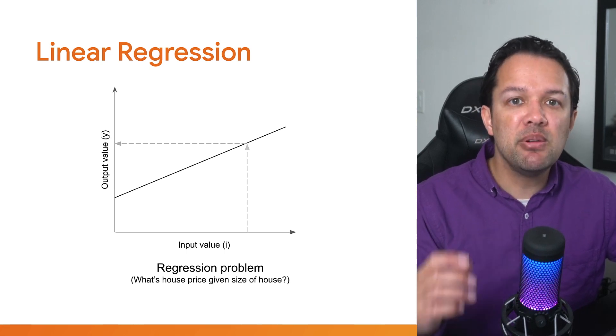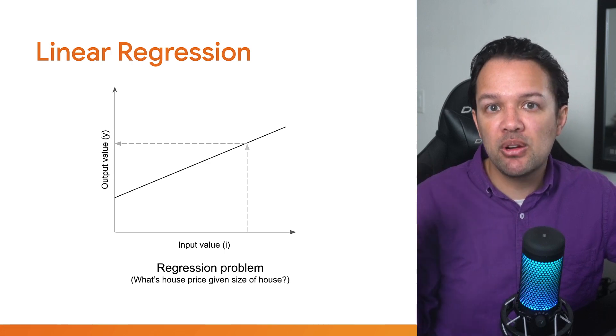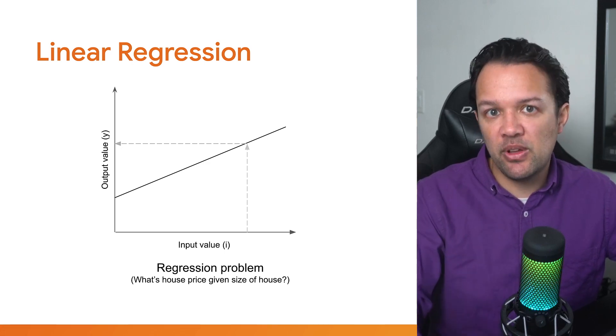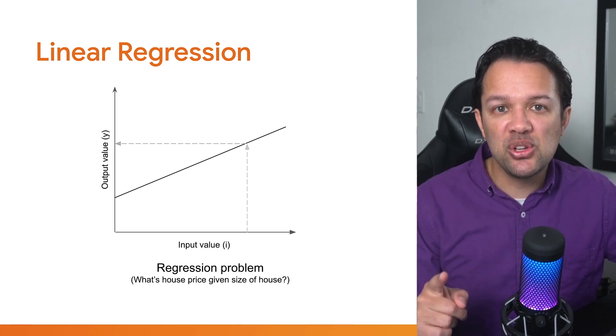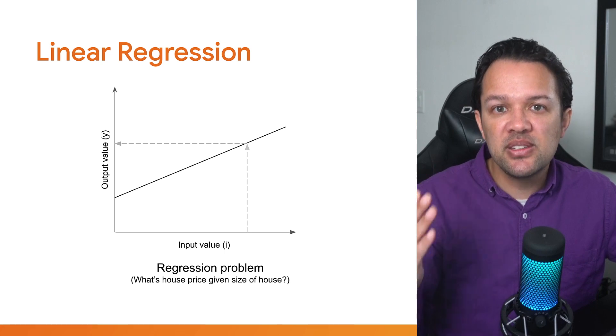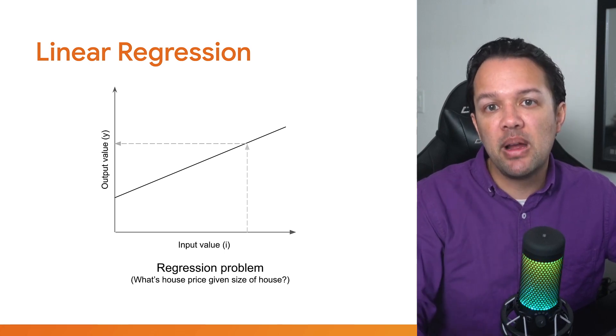If you remember, linear regression allows you to predict some numerical value from some numerical input values, like the price of a house given its size in square feet. If you can calculate the equation of this line, you then have a system to predict any feature value that you might pass to it.